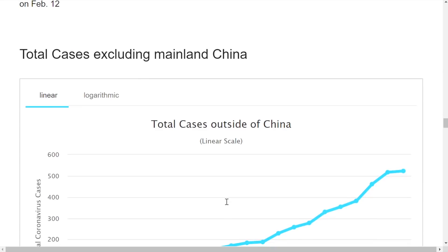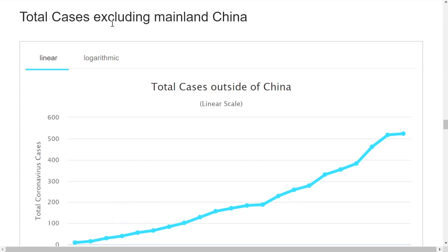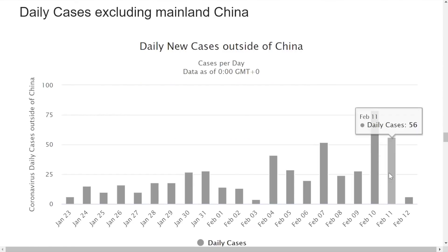Another graph we've been looking at is total cases excluding mainland China. Because we're not overwhelmed with cases—total cases only 517—we can be very careful and do those RNA tests that are very specific. Some of the smallest numbers to date as of February 12th.